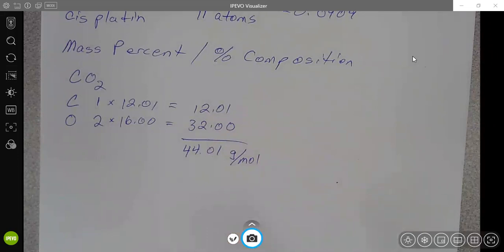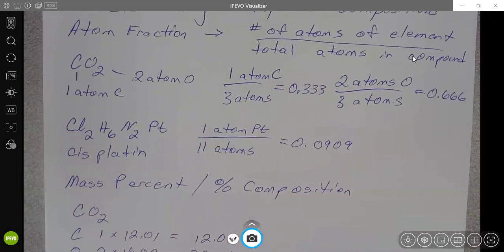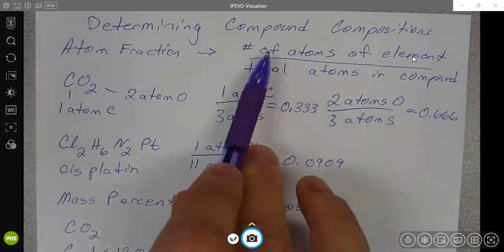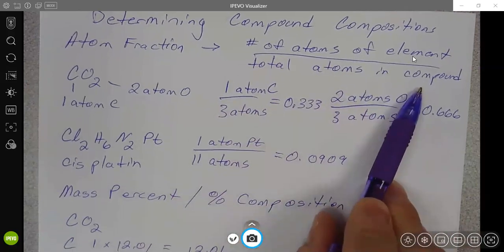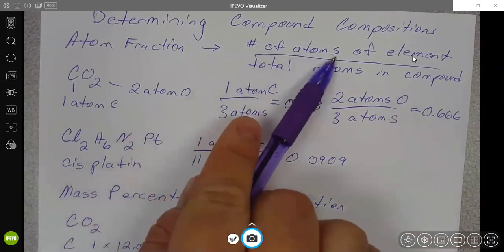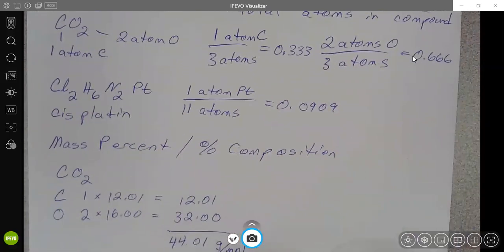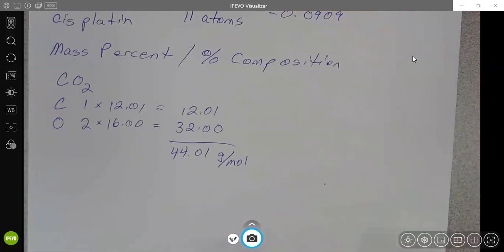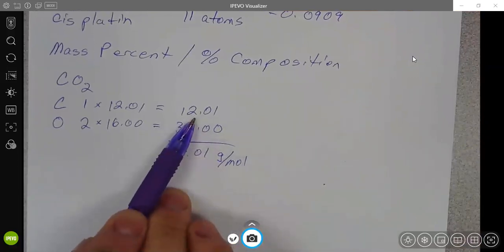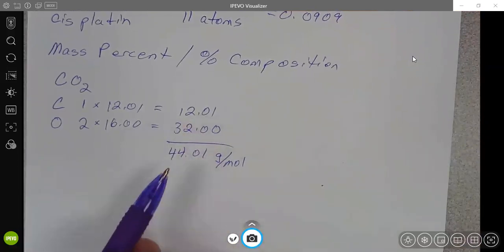From here, we're going to approach this the same kind of way we did with the atom fractions where we're interested in the portion of an element over the portion of the whole. And so with atom fraction, it was the number of atoms over the total number of atoms. We could even put that their total number of atoms here. It's the mass of an element over the total mass of the compound.